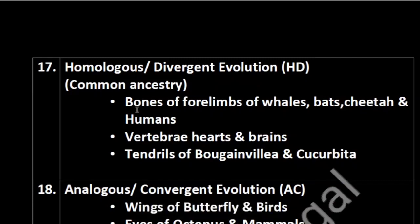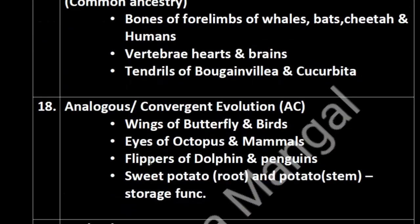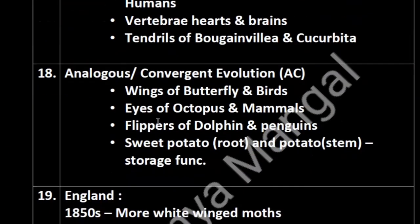Examples of homologous structures: bones of forelimbs of whales, bats, cheetahs, and humans; vertebrate hearts and brains; tendrils of Bougainvillea and Cucurbits. For analogous organs: wings of butterfly and birds; eyes of octopus and mammals; flippers of dolphins and penguins; sweet potato (which is a root modification) and potato (which is a stem modification) — both have the same storage function.